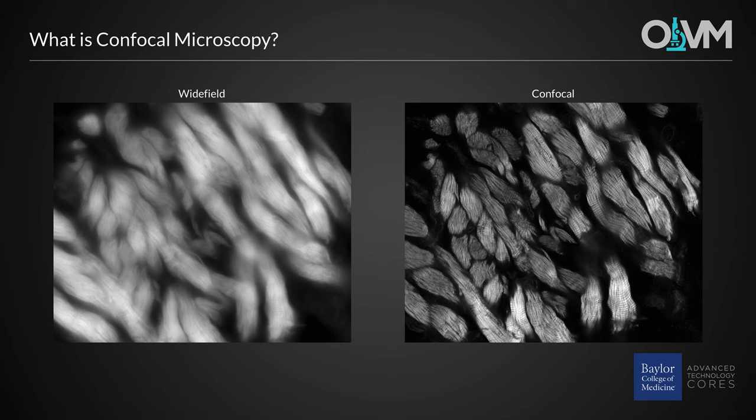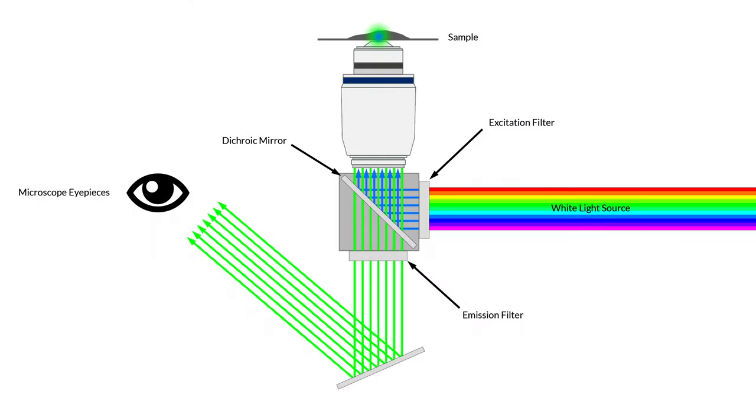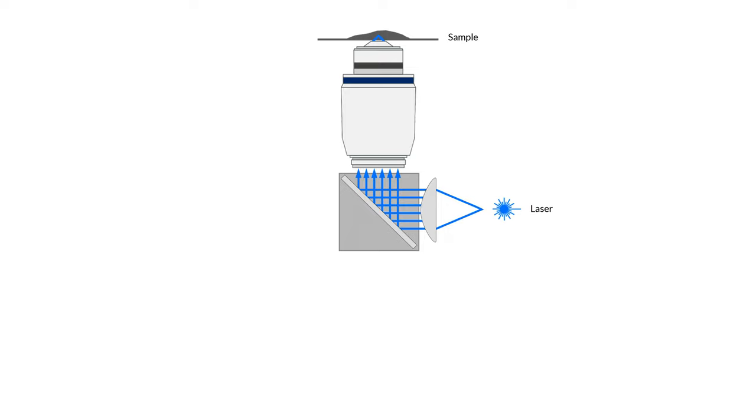This effect will even create an optical section from which we can create three-dimensional datasets. So how do we get a confocal image from our wide-field microscope? A confocal image is created by altering two main aspects of our epifluorescence microscope. The first change is made to our excitation path.